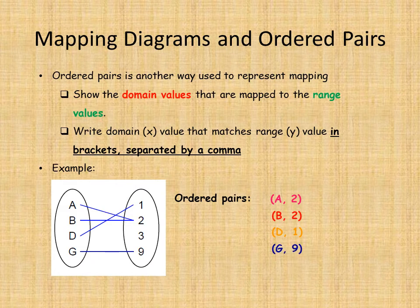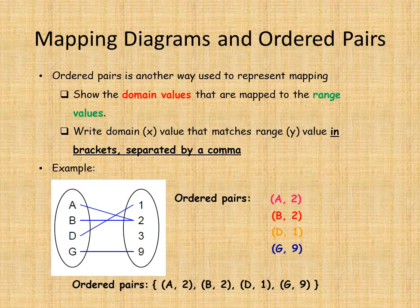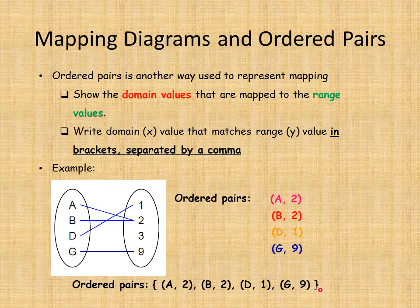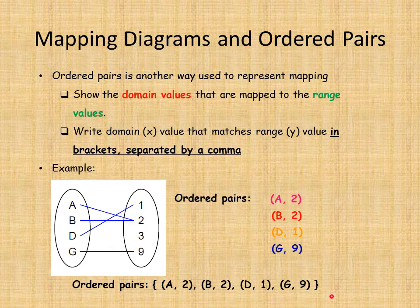Before you try examples on your own, one thing I forgot to point out: when writing ordered pairs, we put them all in curly brackets. We list all the ordered pairs we found together inside curly brackets — I call them curly brackets because they look curly — and we separate each ordered pair from the next with a comma.